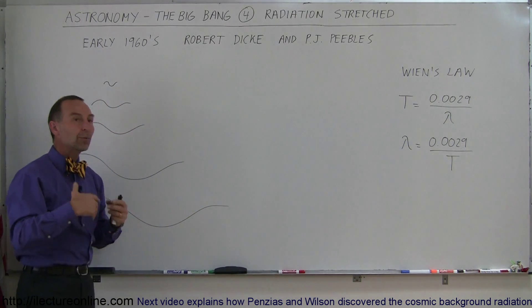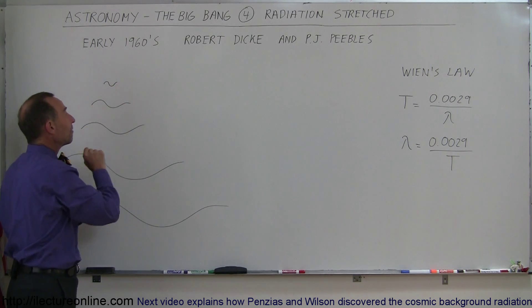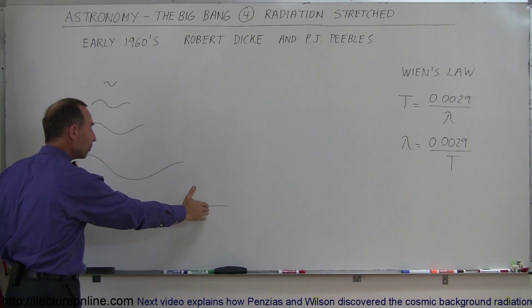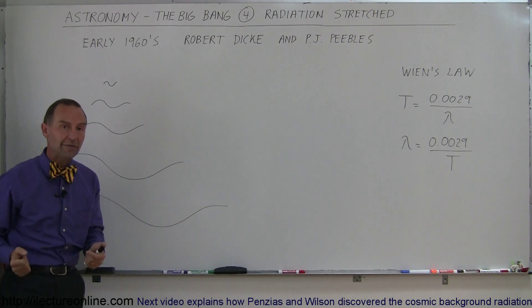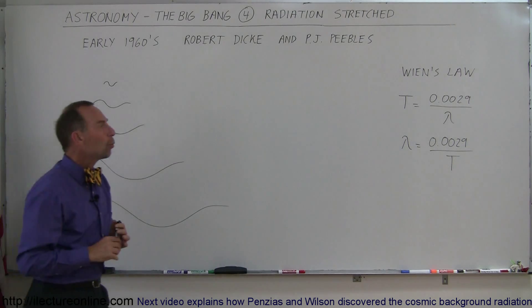So they said that if there's any radiation out there today, then in the past it must have been a very short wavelength, and today it must have grown to a very long wavelength. So they also understood about Wien's law.